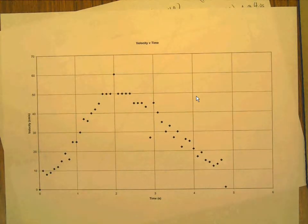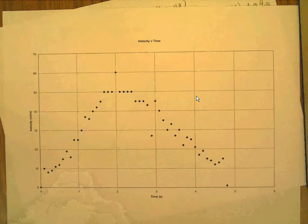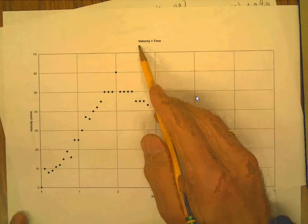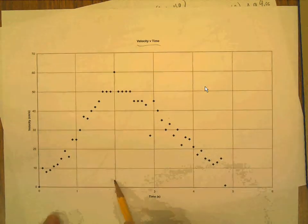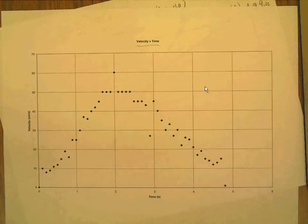And so this is my velocity versus time graph and I've just printed this out super big. You can do this with a small graph.